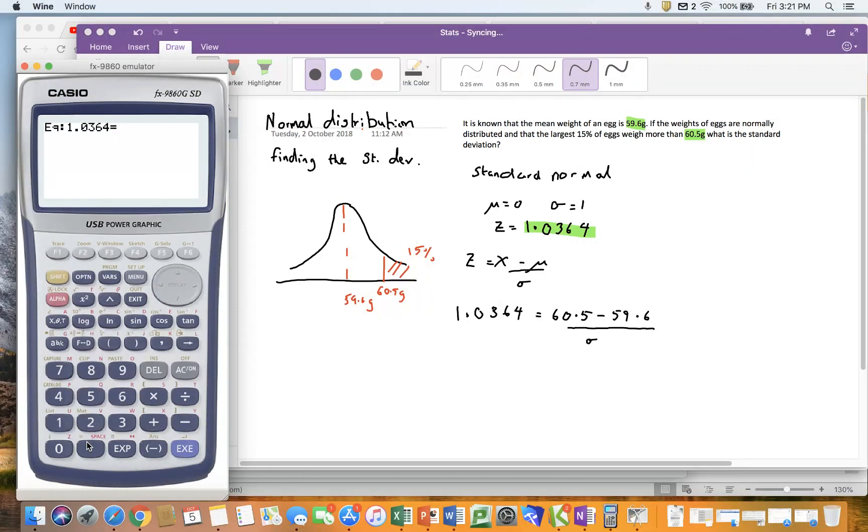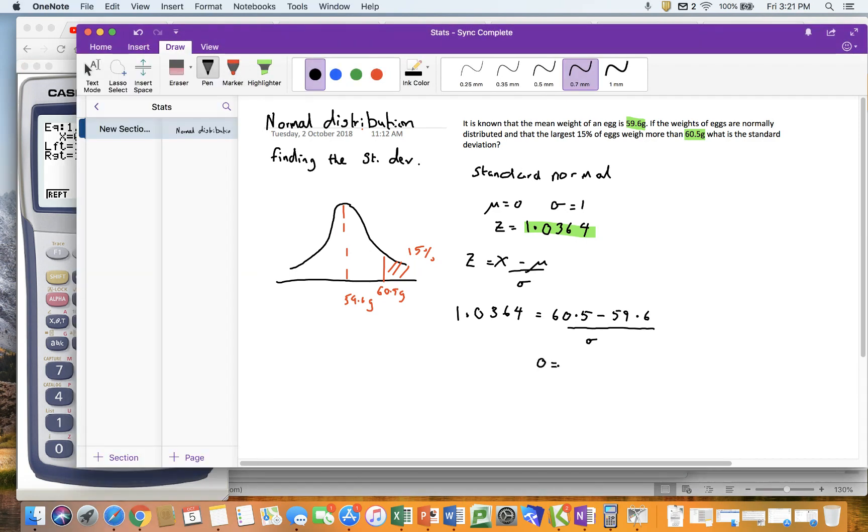Shift decimal place, open the bracket, 60.5 minus 59.6 divided by... now of course I can't put a sigma in so I use an x. It comes up with an answer but it's not the right answer until I click solve. And it's telling me that my standard deviation is 0.8668.